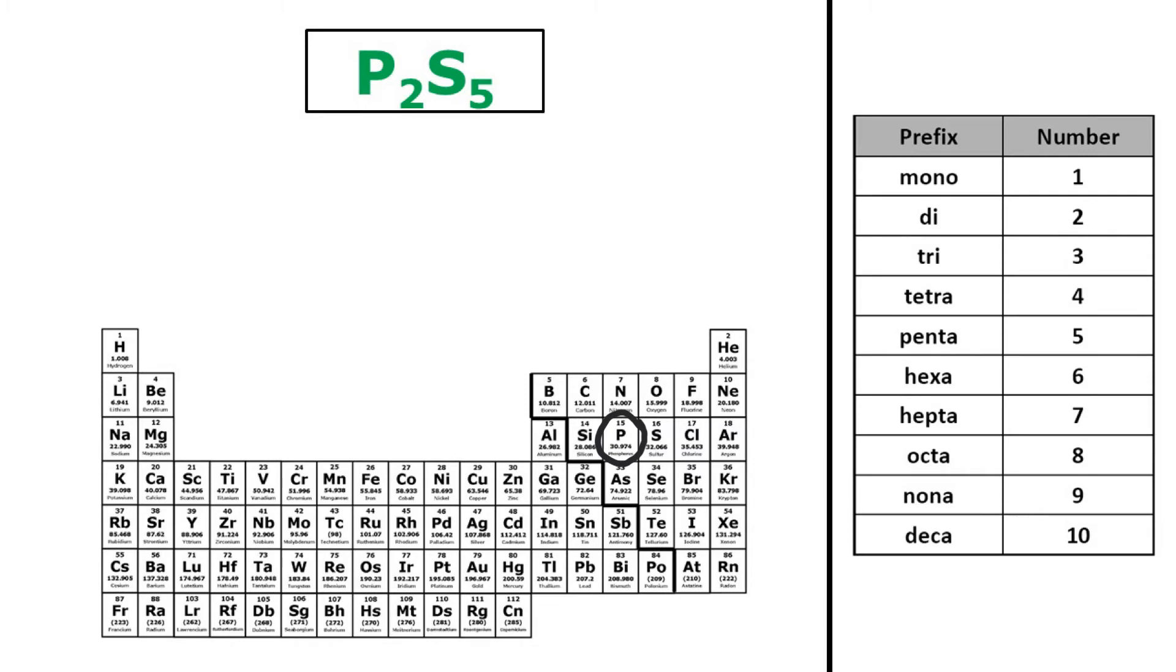And it's P2, so that means I would need to use the prefix di. So I'll just go ahead and write that out all at once. So it's diphosphorus.